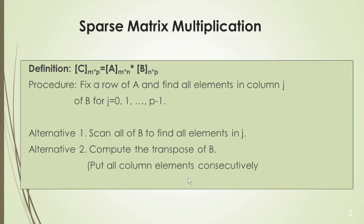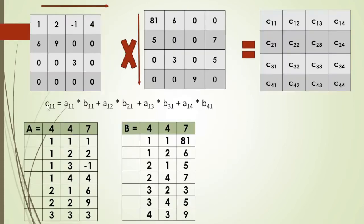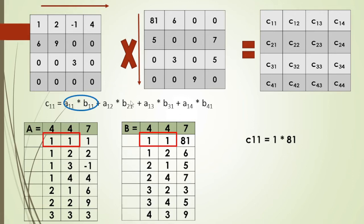Let's see two examples. Given matrix A and matrix B in their 3-tuple form. To compute C11, we calculate A11 into B11. We find A11 and B11, and multiply: C11 = 1 × 8. Then we take the next element. Here we have element at position 1,2 in A, so we need B at position 2,1 and calculate 2 × 5.